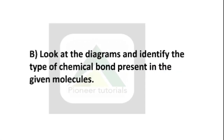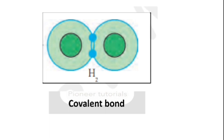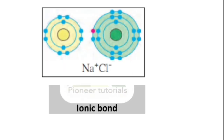Question number 1B: Look at the diagram and identify the type of chemical bond present in the given molecules. This diagram is of hydrogen, so it's a covalent bond. The next diagram is about sodium and chlorine, that is sodium chloride, so it is an ionic bond.